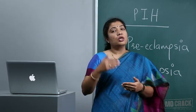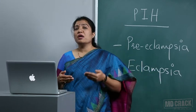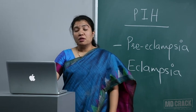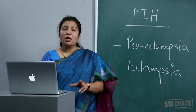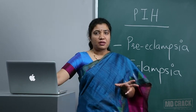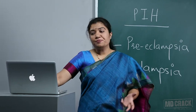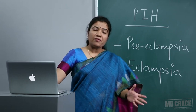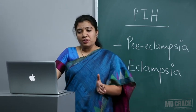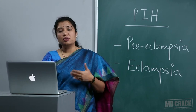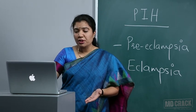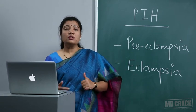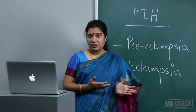Remember all the criteria because MCQs ask things like 'to label a patient as PIH, the following are criteria except.' PIH is classified into: gestational hypertension, preeclampsia, eclampsia, chronic hypertension, and preeclampsia or eclampsia superimposed on chronic hypertension. Now, what are causes of hypertension before 20 weeks? A patient presenting with raised BP before 20 weeks may have chronic hypertension with the pregnancy superimposed.